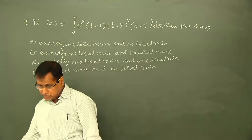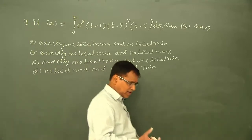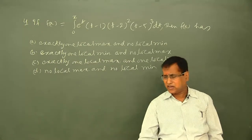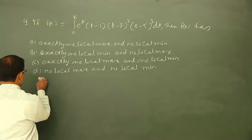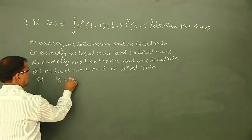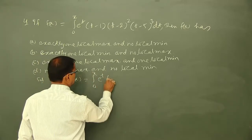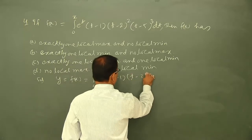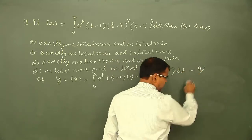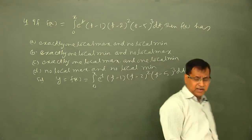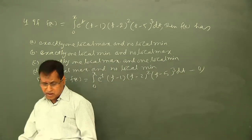To find the maximum and minimum, we note that this function equals an integral, so we find f'(x), i.e., dy/dx, and then write its sign scheme. Let y = f(x) = integral from 0 to x of e^t · (t−1) · (t−2)² · (t−5)³ dt. Note the integral is with respect to t, so t is the integration variable.